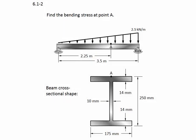Problem 6.1-2. Find the bending stress at point A. Here's a beam simply supported with a triangular shape distributed load. And point A is shown here at a distance of 2.25 meters from the left side.